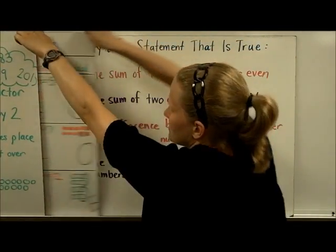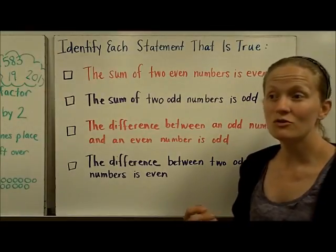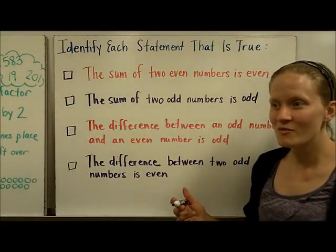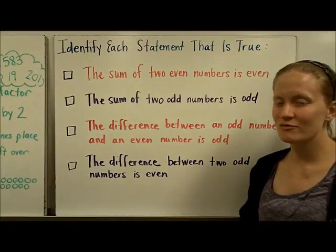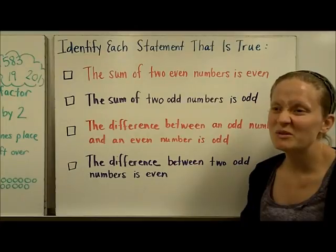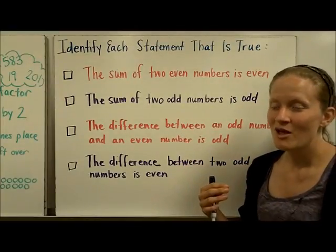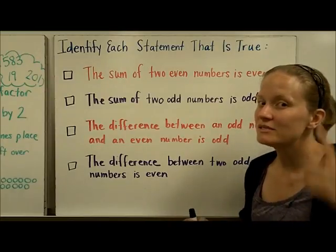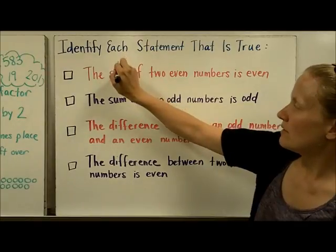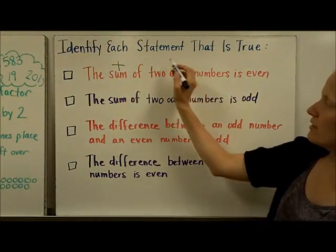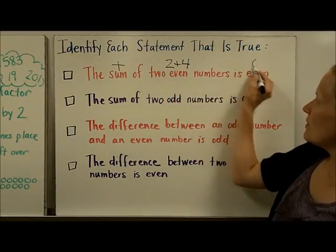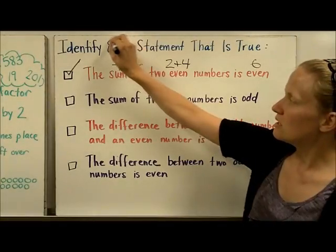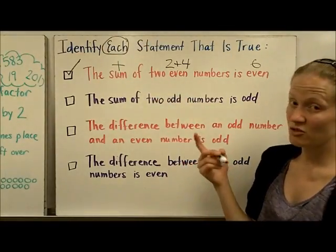Here's a practice problem that requires you to use the patterns we just identified. You may use your chart if notes are allowed, but you might have to solve it without. I'll talk through how I'd approach this — starting with the simplest example I can think of, then doing at least one more to verify. There's likely more than one true statement to select. The sum — that's addition — of two even numbers is even. Let's try 2 and 4: they make 6, which is even. I'll check that one off as true.